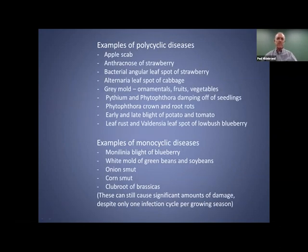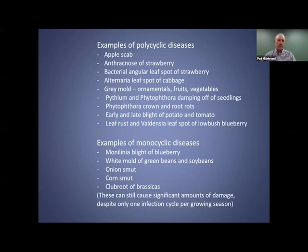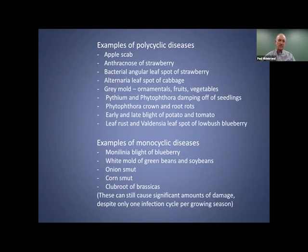Examples of polycyclic diseases include apple scab, anthracnose of strawberry, Pythium and Phytophthora damping off of seedlings, and early and late blight of potato and tomato. Examples of monocyclic diseases are Monilinia blight of blueberry, white mold of green beans and soybeans, onion smut, corn smut, and club root of brassicas. Just because they're monocyclic doesn't mean they can't cause extensive damage — they absolutely can and have to be treated with kid gloves.